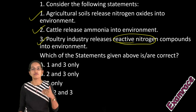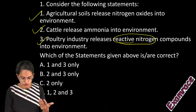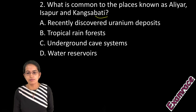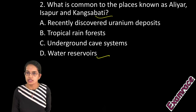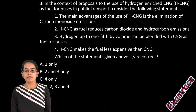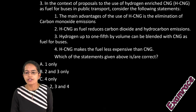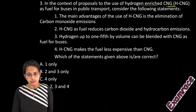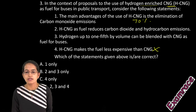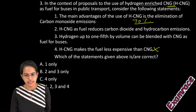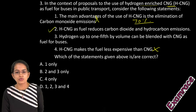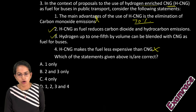Note that there were lots of questions from Down to Earth and The Hindu in the first 25 questions. Aliyar, Isapur, and Kanspati are known for water reservoirs — the water reservoir dam rehabilitation project that came in the news. Regarding hydrogen-enriched CNG: it is more expensive than normal CNG, and it reduces the proportion of carbon monoxide by 70%, so the first and fourth statements are incorrect. Only options two and three are correct here.